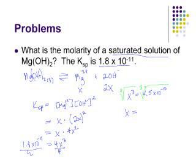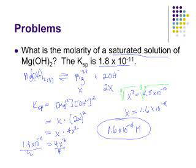And so it comes out to be 1.6 times 10 to the negative 4. Alright. And so the molarity of a concentrated solution of magnesium hydroxide would be 1.6 times 10 to the negative 4 molar. Alright. Now that would give us the magnesium ion concentration. I do want to remind you the hydroxide ion concentration would be twice that big.